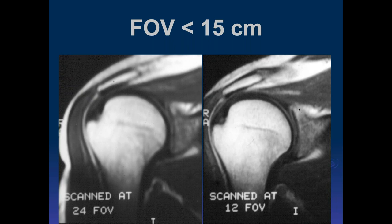You can see the same shoulder scanned at those two different techniques. You really need resolution to see the details of the articular cartilages. The normal recess has a nice curvilinear appearance — that's normal. A straight appearance is usually indicative of a tear. If you don't have adequate resolution you can't see the morphology needed to make the diagnosis. The difference between those two papers wasn't MR itself — it was that proper acquisition protocols are essential.